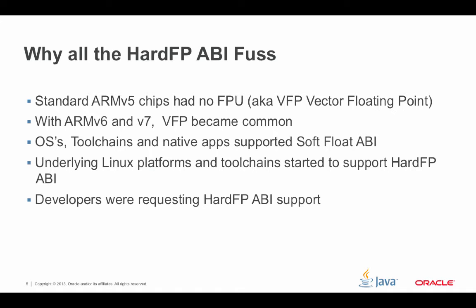That's where VFP started to come in, and they created something called soft float. A variety of the OS, toolchain, and native apps were supporting soft float ABI. Soft float was good because you could run on ARM-based systems that either had VFP or didn't have VFP, which made it convenient. Eventually, Linux platforms started to support the hard FP ABI. What this meant was that they're actually going to use the FPU registers all the time, which requires a system that has VFP. That's why only systems with VFP can run these Linux platforms and toolchains supporting the hard FP ABI.